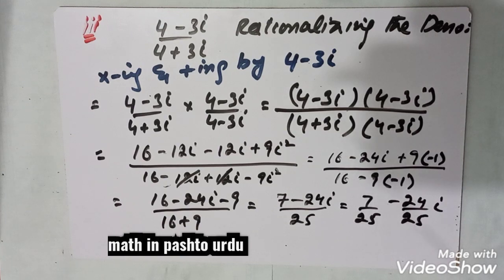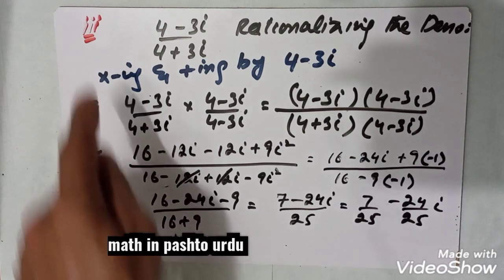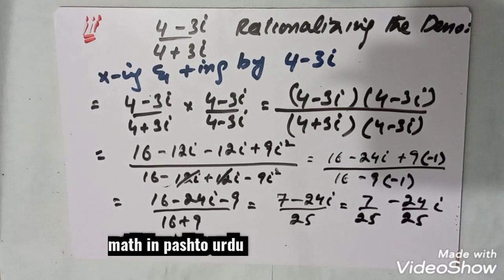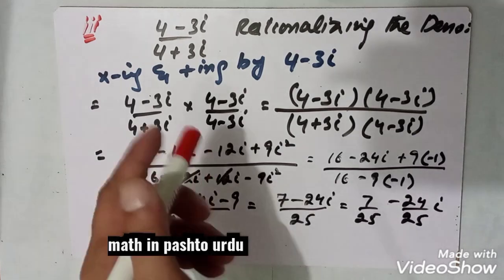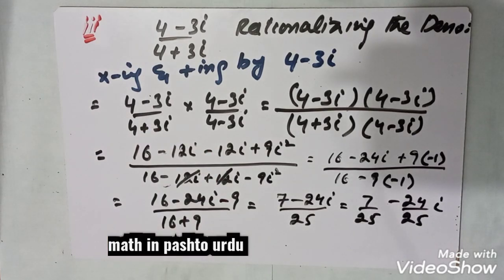Hello viewers, moving to our next part, Part 3. Part 3 is (4 minus 3 iota) divided by (4 plus 3 iota). We have to rationalize the denominator to remove the iota from the denominator.